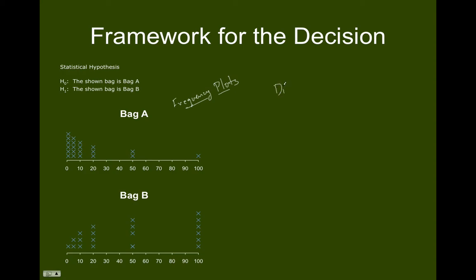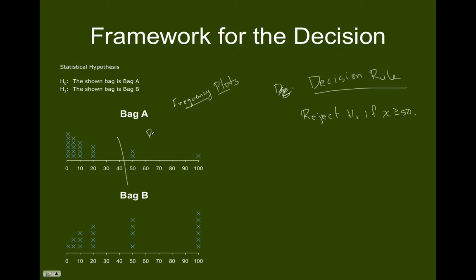Let me look at a different decision rule. Suppose our decision rule is to reject H0 if the value of the voucher is at least $50. In other words, I'm going to draw a line through the distribution and say reject H0 if we get a $50 or $100 bill, and do not reject H0 if we get a $1, $5, $10, or $20 bill.